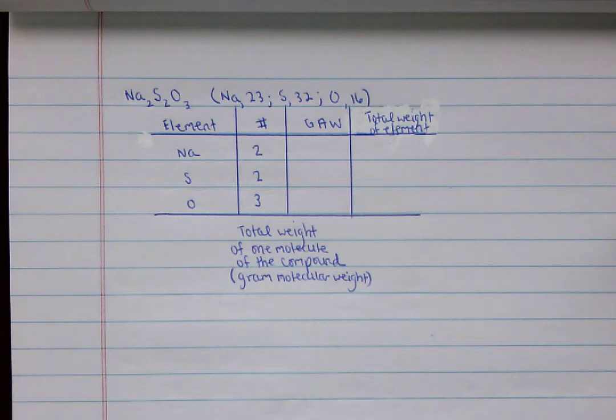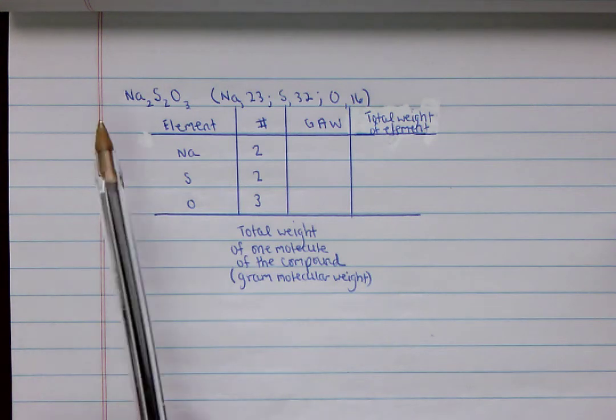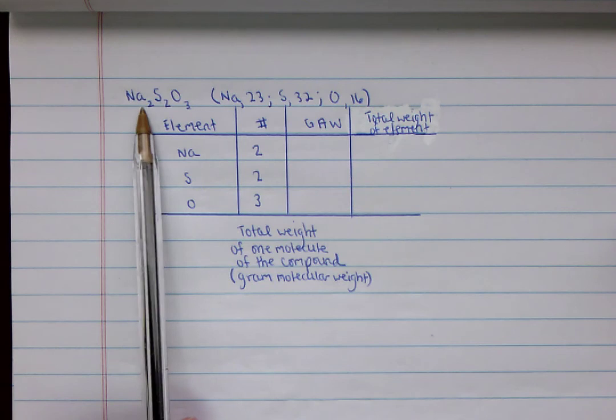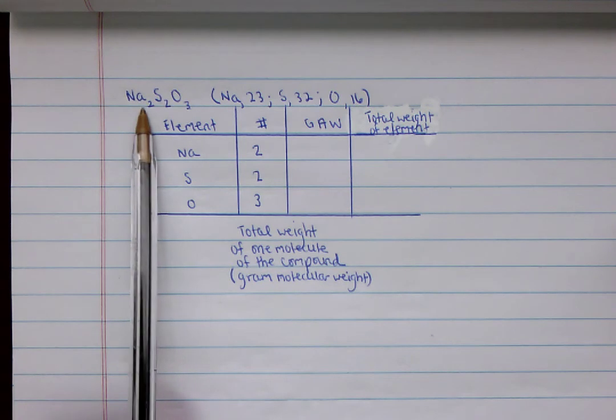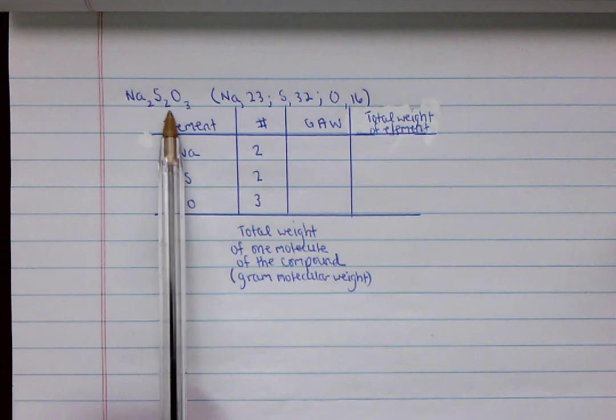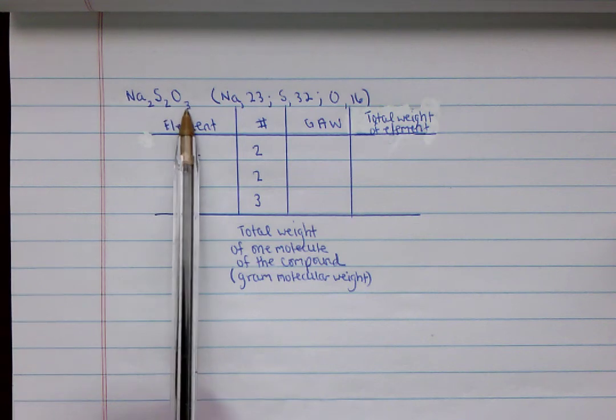So far, we've investigated the relative weights of the elements in a chemical compound by using ratios. So for example, in a molecule of this compound, there are two atoms of sodium, two atoms of sulfur, and three atoms of oxygen.